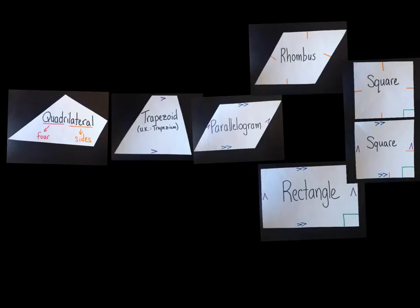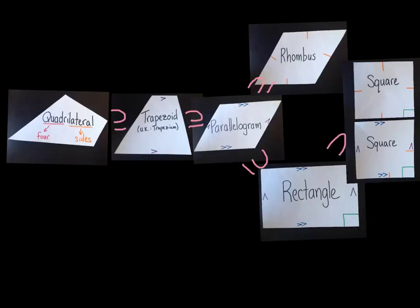Here we have the hierarchy of quadrilaterals. A trapezoid is definitely a quadrilateral. A parallelogram is definitely a trapezoid, and therefore also a quadrilateral. Rhombuses are all parallelograms, and rectangles are all parallelograms, even though rhombuses and rectangles aren't necessarily each other. Squares are always rectangles, and squares are always rhombuses.